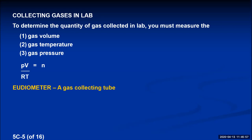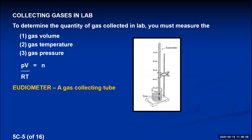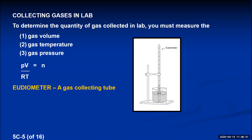The eudiometer is completely filled with water, turned upside down, inserted into a beaker of water, and clamped to a ring stand. A hose or gas source is placed underneath and gas is evolved into the eudiometer, forcing water out. The gas rises to the top and is trapped. The eudiometer is calibrated like a graduated cylinder so we can read the volume of trapped gas directly.